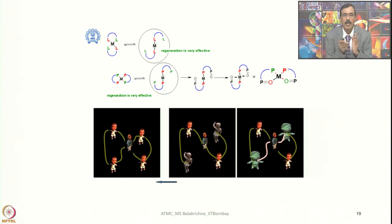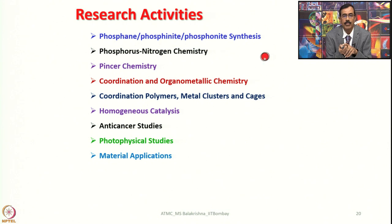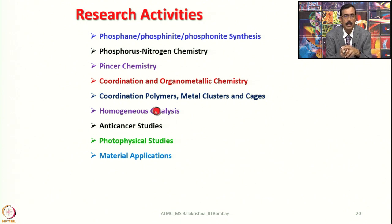I am sure we are now convinced why we are very particular about designing appropriate phosphines with appropriate characteristics so that we can use them efficiently and they can be more durable. When we look into phosphorus-bound metal complexes, their applications are plenty. Phosphines are also called phosphonides, phosphenides, and phosphorus–nitrogen compounds. Pincer chemistry, coordination polymers, metal clusters, metal cages, homogeneous catalysis, anti-cancer studies, photophysical studies, and material applications are all areas where phosphines play a major role.